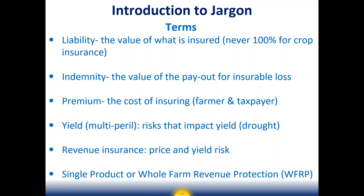A quick review of jargon. Liability is the value of what is insured. Indemnity is the value of the payout — what you get paid should you have a cause of loss. Premium is the cost of insuring. Crop insurance is federally subsidized and has both a farmer component and a taxpayer component. Most farmers are just interested in what it costs them. Yield insurance is also known as multi-peril because there are multiple perils that can affect your yields, such as drought.